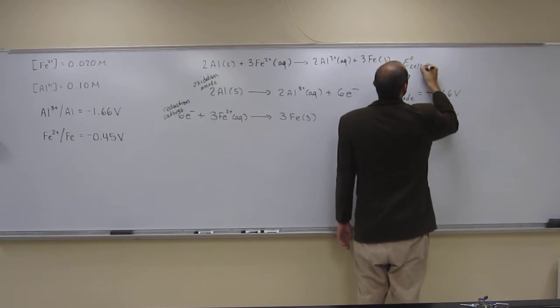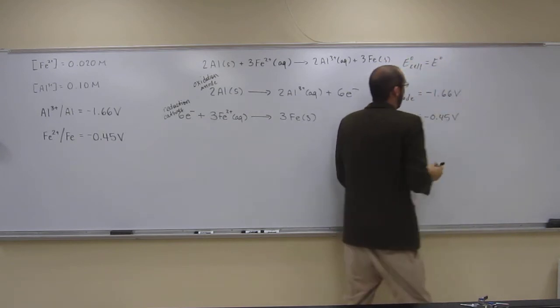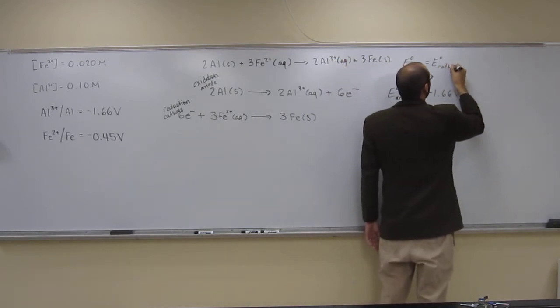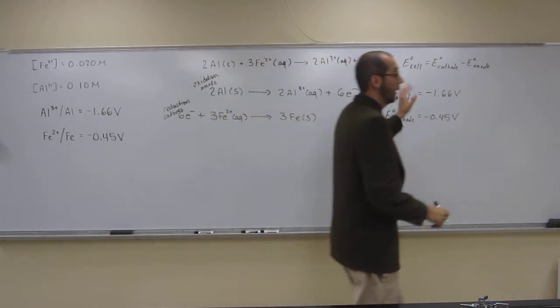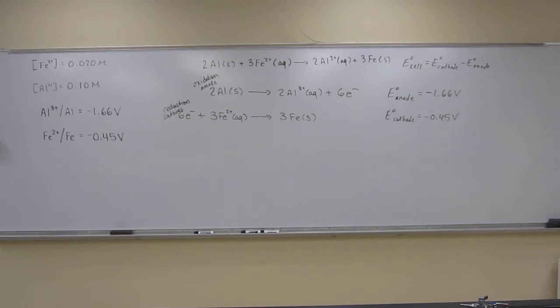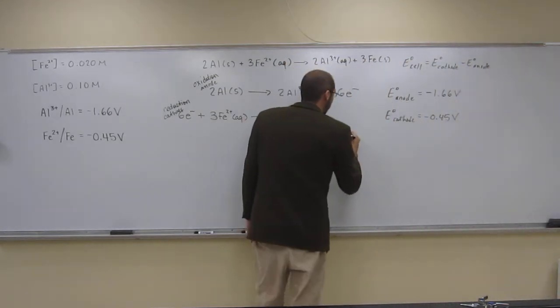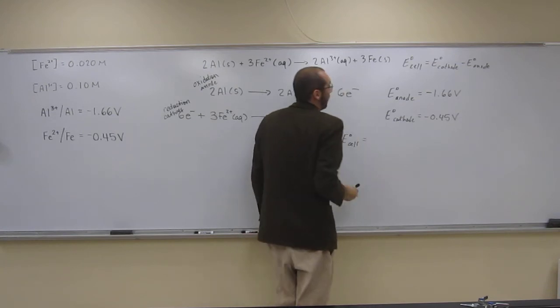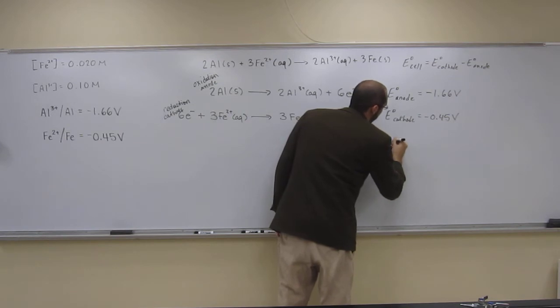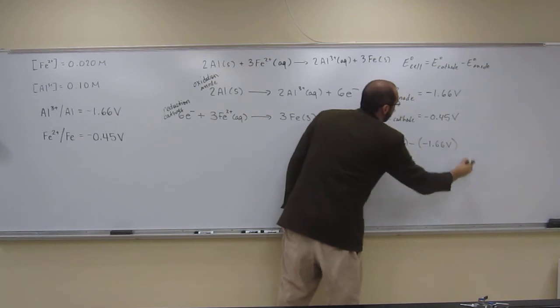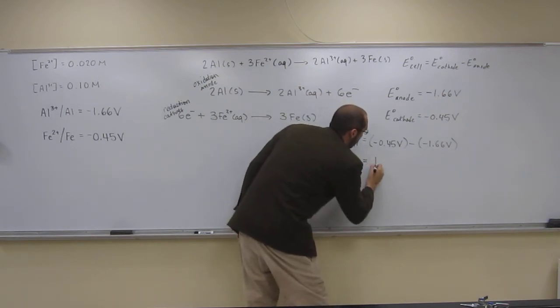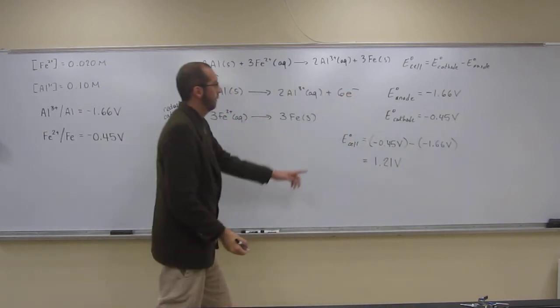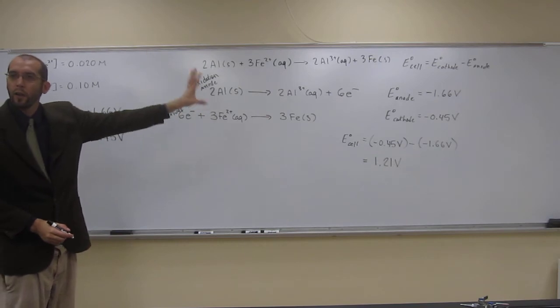So how do we do that? Well, that's going to be the standard potential of the cathode minus the standard potential of the anode. So let's go ahead and just plug and chug so we can get our E cell. We need negative 0.45 volts minus the negative 1.66 volts. So I think I can do this one in my head—that's going to be 1.21 volts. So positive 1.21 volts. Is everybody okay all the way up to here?